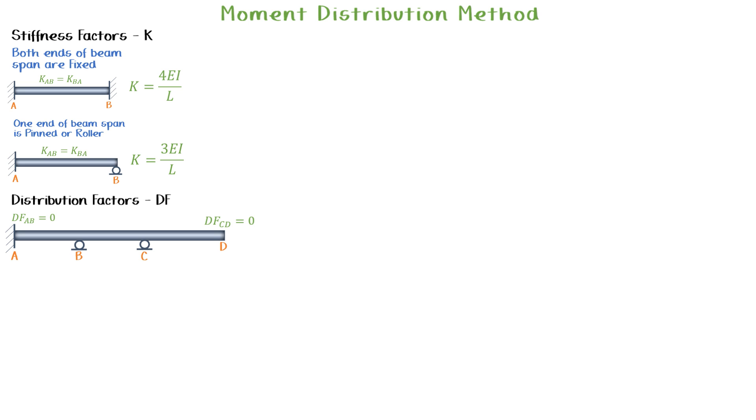Node C will distribute all its moment back to node B. Therefore, distribution factor from C to B is one.